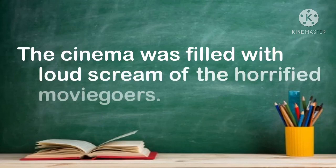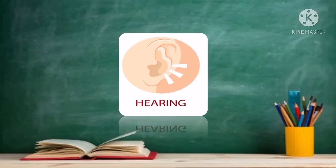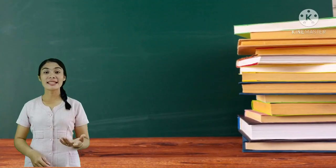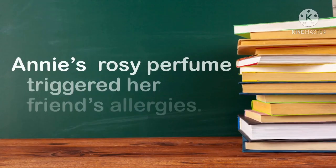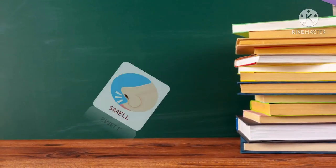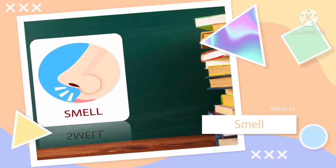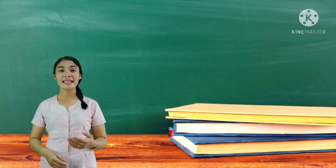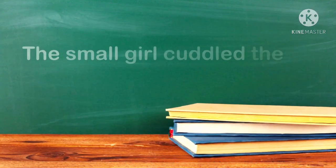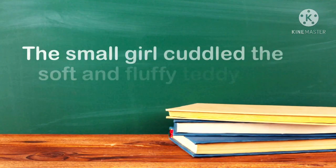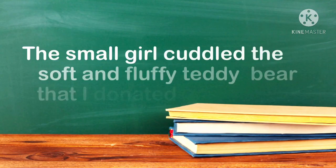What sense is the author appealing to in this sentence: 'The cinema was filled with the loud screams of the horrified moviegoers'? What sense is the author appealing to in: 'Annie's rosy perfume triggered her friends' allergies'? What sense is the author appealing to in: 'The small girl cuddled the soft and fluffy teddy bear that I donated'?